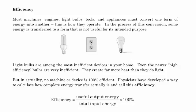Efficiency is a little bit different than power, and efficiency really talks about how good something is at converting energy from one form to another. So most engines, machines, most lightbulbs, tools, will take electrical energy and convert it into some type of useful energy. And in the process of that conversion of energy, some energy is transferred to a form that's not useful.